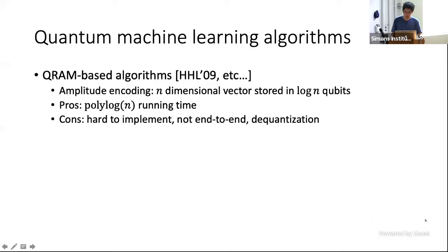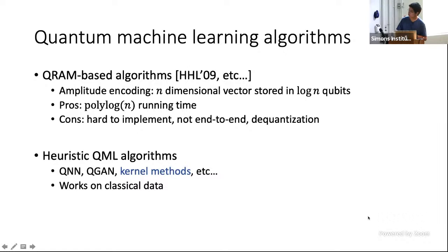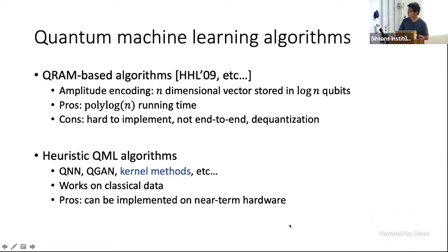Given these three limitations, people have designed a different family of quantum machine learning algorithms that directly work on classical data. This is what we call heuristic quantum machine learning algorithms, including quantum neural networks, quantum generative models, kernel methods, et cetera. These algorithms have the unique advantage of being implementable on near-term hardware. However, the main problem is that there has been little formal evidence that shows these heuristic algorithms can have a quantum advantage. This is the challenge we will address in this talk.